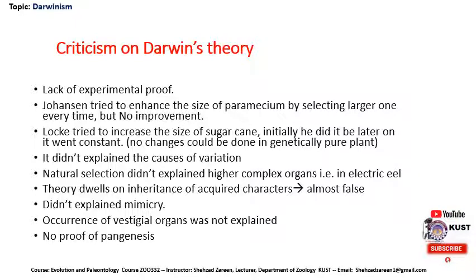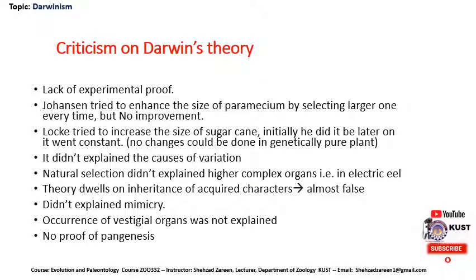Moreover, Darwin's theory of natural selection did not explain the causes of variation. It did not explain higher complex organs, like how an electric eel produces electricity. This theory dwells on inheritance of acquired characters, which is almost false. Darwin's theory did not explain mimicry. The occurrence of vestigial organs was also not explained by Darwin's theory of natural selection. And last but not least, there was no proof of the theory of pangenesis.